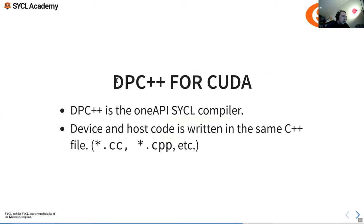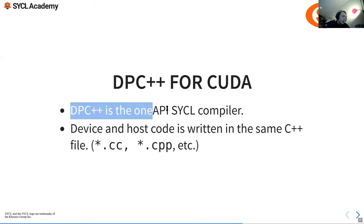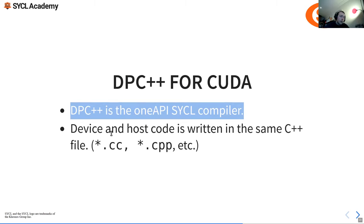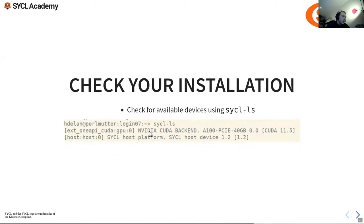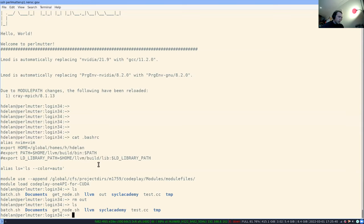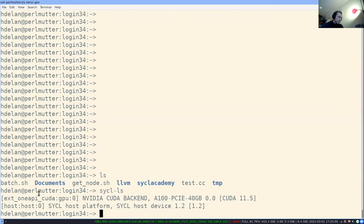DPC++ for CUDA: DPC++ is the oneAPI SYCL compiler where device and host code is written in the same C++ file — with any extension like .cc, .cpp, etc. Let me go over to my Perlmutter tab to check that the install is working. So sycl-ls is the first tool we should use when checking what devices are available — it confirms the DPC++ installation is working.